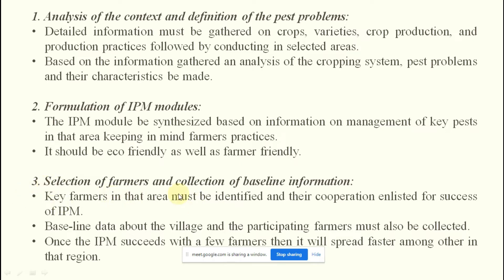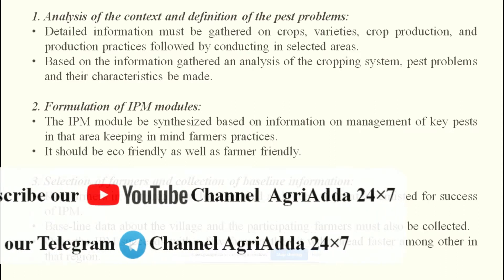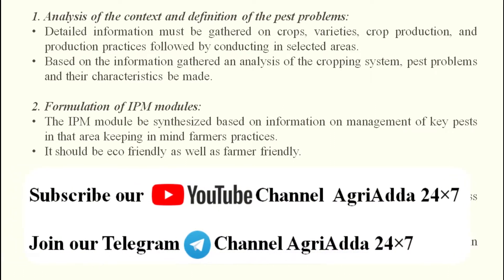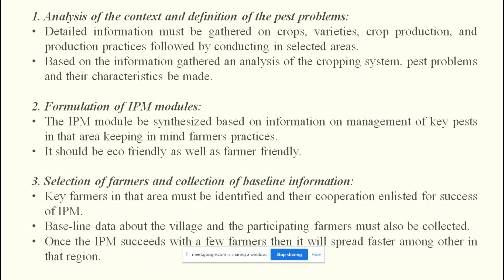The third step is selection of farmers and collection of baseline information. You should choose farmers who are somewhat successful, well-known, and have larger areas — not laggard farmers with very small fields, as they won't provide encouragement or motivation. Baseline data about the village and participating farmers must also be collected. Once IPM succeeds with a few progressive farmers, it will spread faster among others in that region, motivating even the less successful farmers.